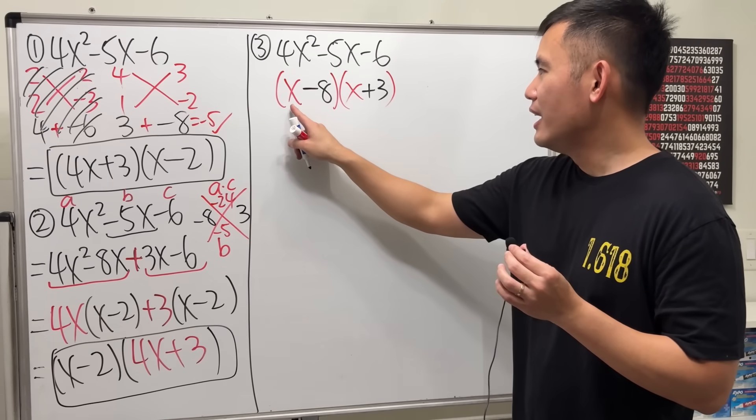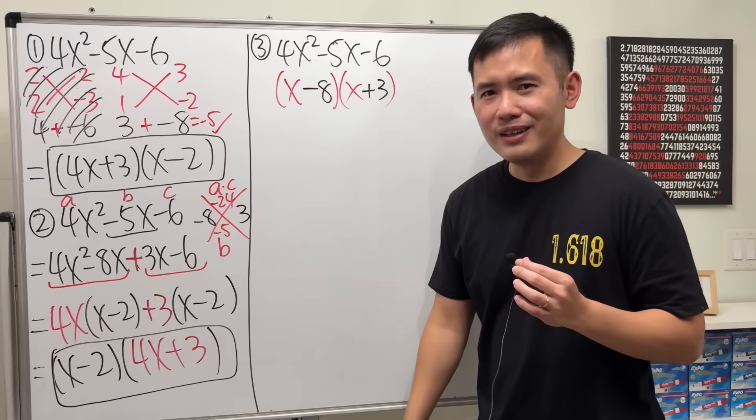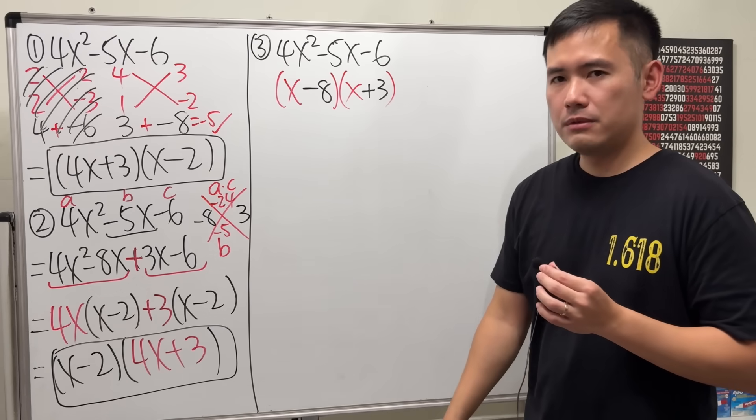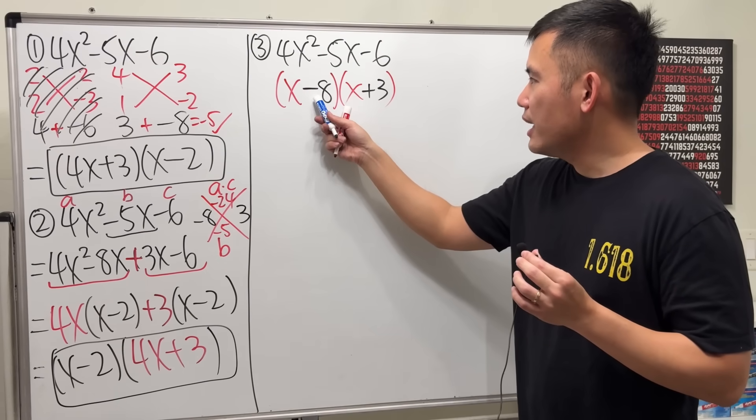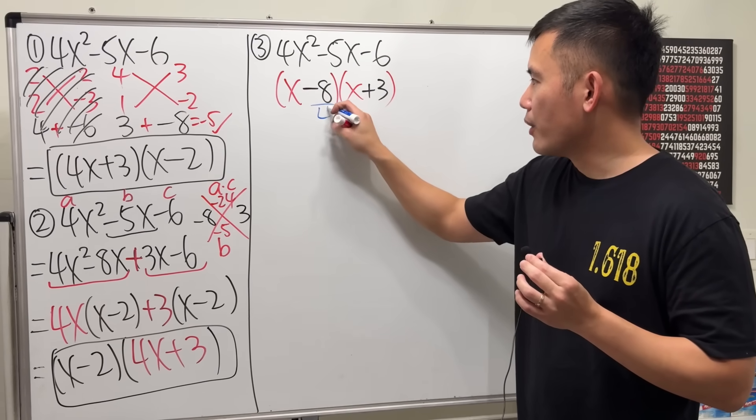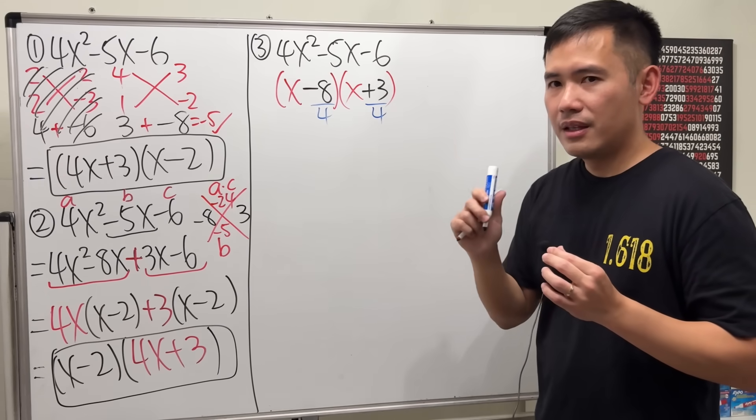Because you can see, x times x is x squared. But, here we need to have 4x squared. So, where is the 4? Right? Where is the 4? Here's how we are going to use the 4. Ready? Look at this number divided by 4. And then, look at this number. Do the same thing.